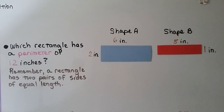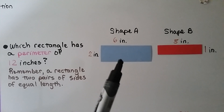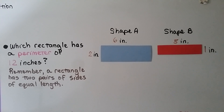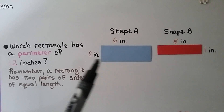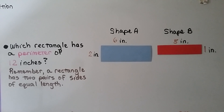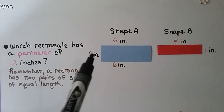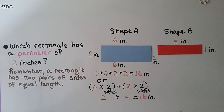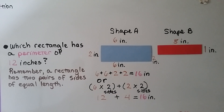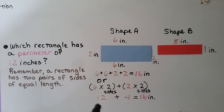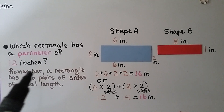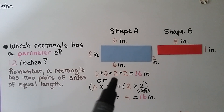Which rectangle has a perimeter of 12 inches? We have shape A, the blue rectangle, and shape B, the red rectangle. A rectangle has two pairs of sides of equal length. For shape A, if this is 6 inches, then the opposite side is 6 inches; and if this is 2 inches, the other side is 2 inches. We add 6 plus 6 plus 2 plus 2, which equals 16 inches. So shape A does not have a perimeter of 12 inches.